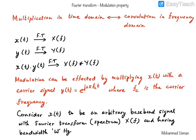The signal X(t), which is our modulating signal, let's consider to be an arbitrary baseband signal which has some Fourier transform denoted by X(F). By baseband, we mean its spectrum X(F) is centered on zero frequency. Let's say the signal X(t) has a bandwidth of W hertz, as we will see in our illustrations as we go on.